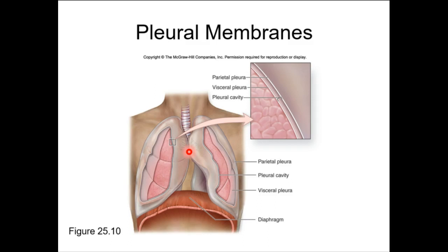You're going to have a visceral and parietal pleura. The parietal pleura will be on the outside at the body wall, and the visceral pleura is adhered to the surface of the organ itself. In between those two serous membranes is the pleural cavity, which should be a very small space filled with serous fluid.